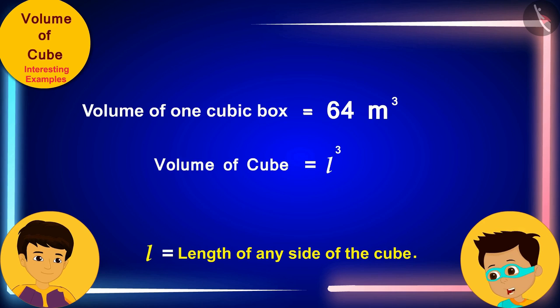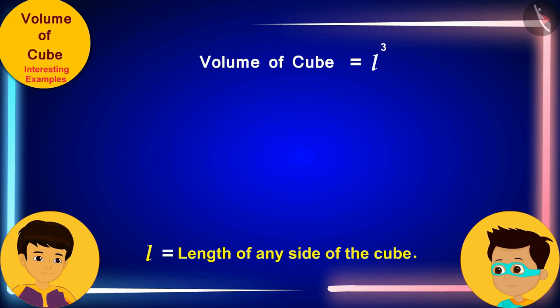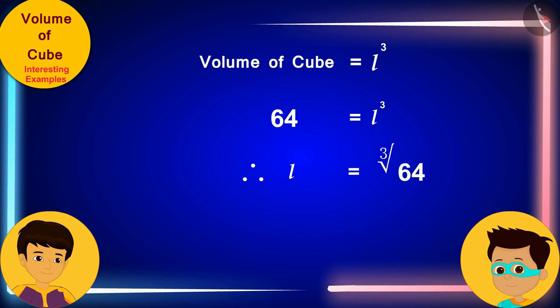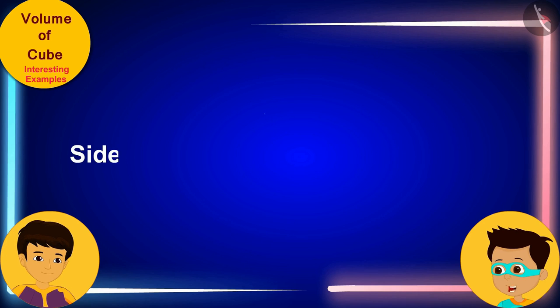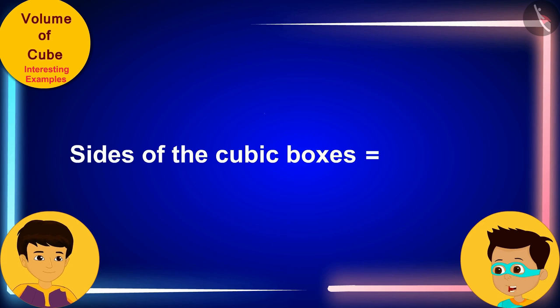Now, we just have to solve it by writing the volume of a box here instead of the volume of the cube. And then, we will know the length of the sides of the cubic box. The sides of the cubic boxes are 4 meters long.